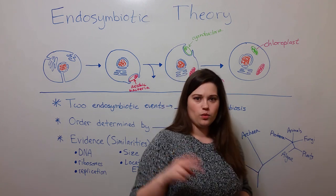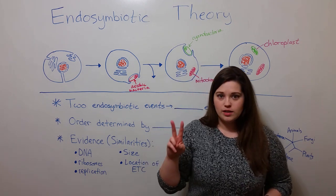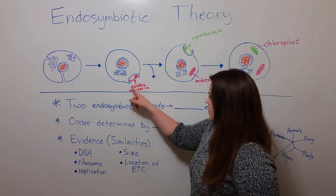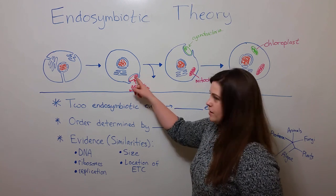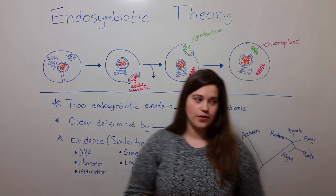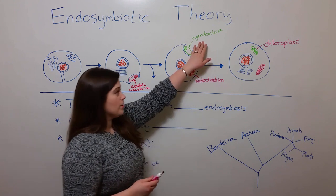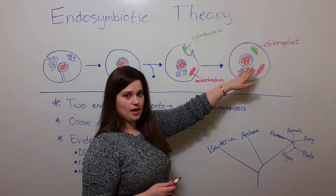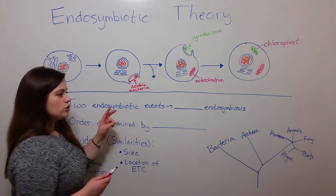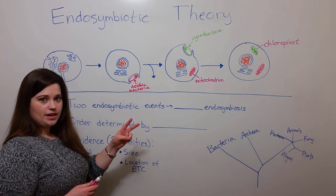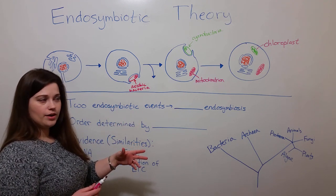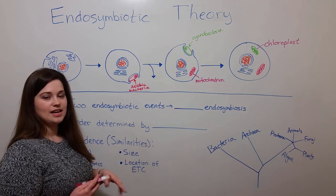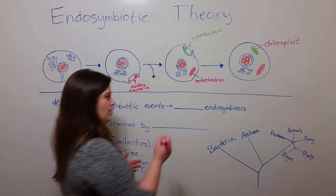We see here that there were two endosymbiotic events. The first one, where the aerobic bacterium was engulfed, leading to the mitochondrion, and the second one, where the cyanobacterium was engulfed, leading to the chloroplast. The fact that there were two endosymbiotic events, one following the other, means that this entire process is known as serial endosymbiosis.